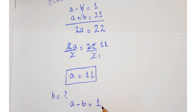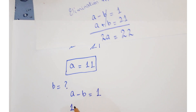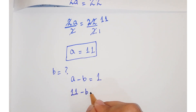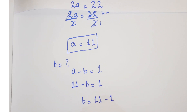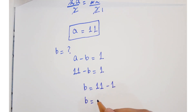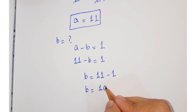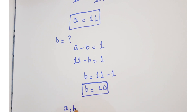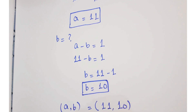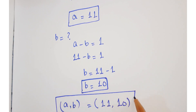Now for finding b, we know that a minus b equals 1. Putting the value of a, we have 11 minus b equals 1. So b equals 11 minus 1, which gives b equals 10. So from the first case, a and b equal 11 and 10.